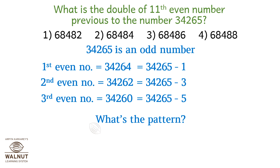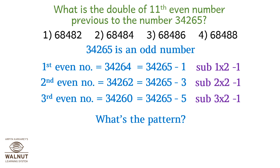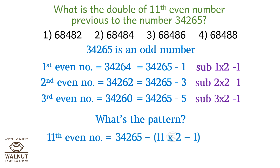What's the pattern that you see? Subtract 1 into (2 minus 1). Subtract 2 into (2 minus 1). Subtract 3 into (2 minus 1). So the 11th even number before 34265 is 34265 minus 11 into (2 minus 1), which is 34244.